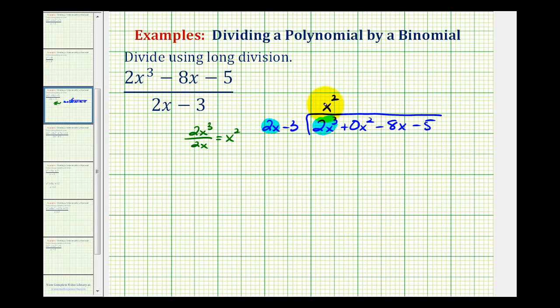Now we multiply x squared and our divisor. So we'll have x squared times 2x, that's 2x cubed. And then we'll have x squared times negative 3, that's going to be minus 3x squared.